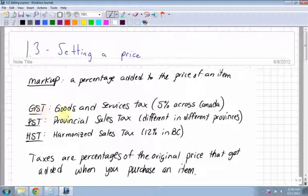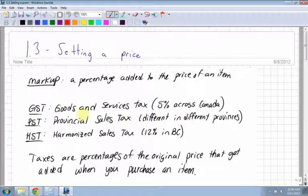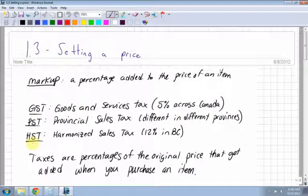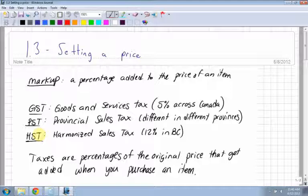GST of course is the goods and services tax, which we don't have anymore, but it was 5% across Canada. PST is the provincial sales tax, which is different in different provinces. If you live in BC, now we have the HST. HST is the harmonized sales tax, and in BC right now it's 12%. We'll base all our calculations with 12% HST, depending on what province you're in.